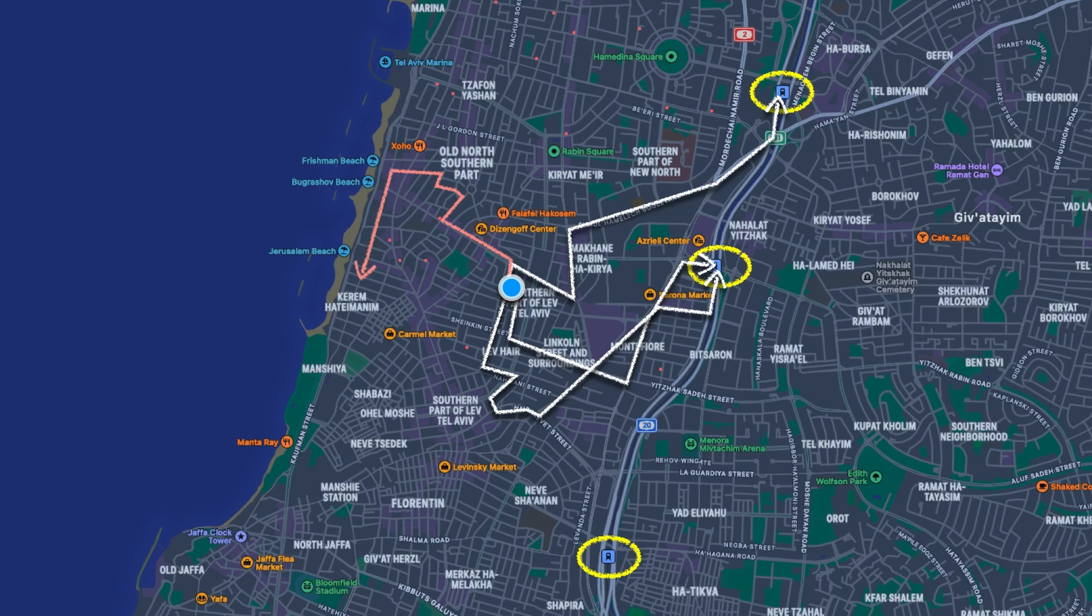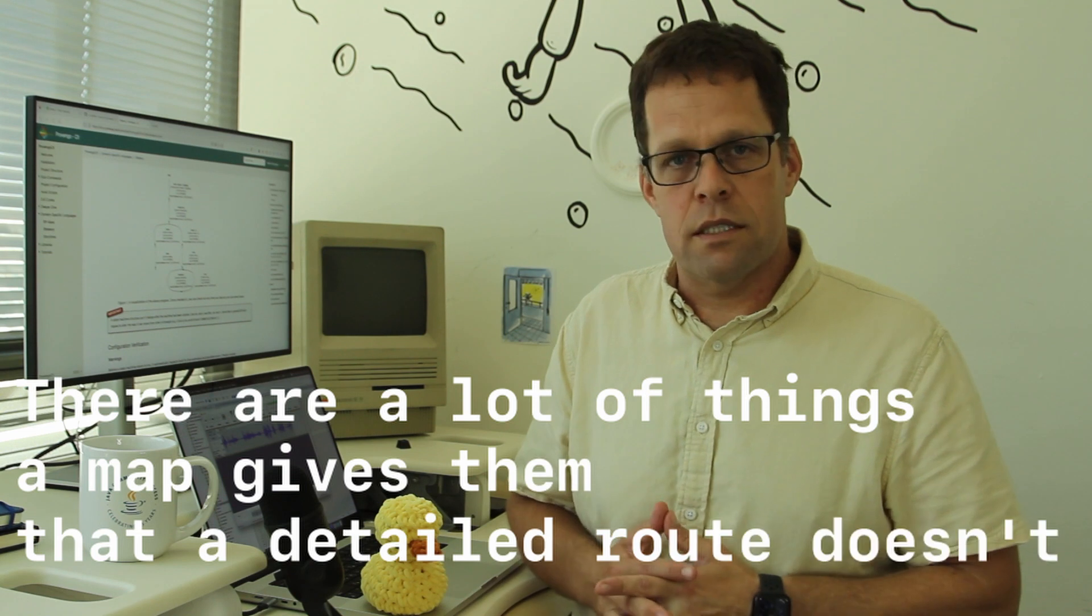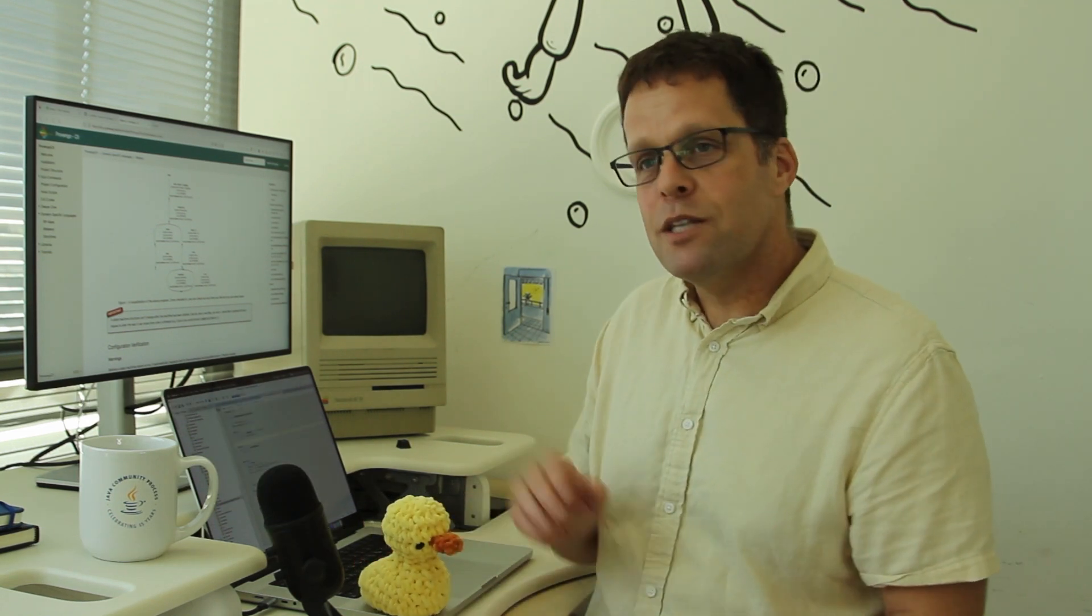You even gave them options that don't really make sense, but they're there. Suppose they want to visit the entire neighborhood while getting to the train station. So there's a lot of things a map gives them that a detailed route doesn't.